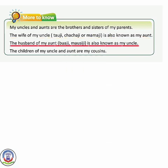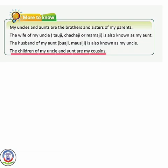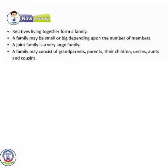The husband of my aunt — Bhua ji or Masi ji — is also known as my uncle. Mere jo aunt hain unke husband ko hum uncle keh sakte hain. The children of my uncle and aunt are my cousins — that is, cousin brother and cousin sister, yaani chachera bhai ya chacheri behen.